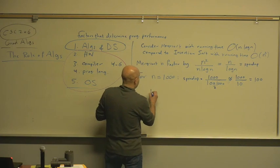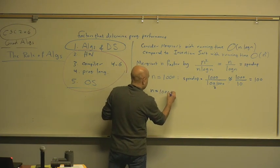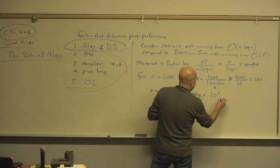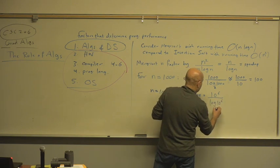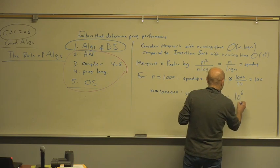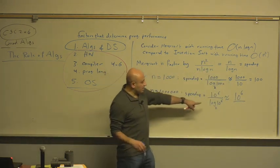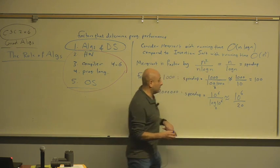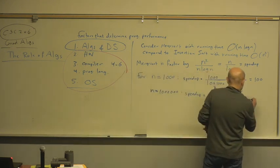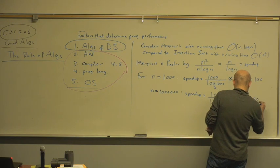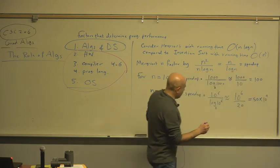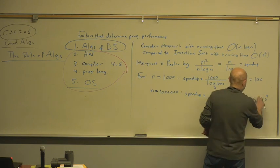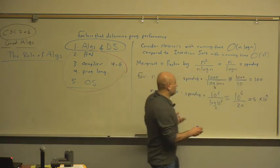In fact, if we look at n equals 1,000,000, the speedup equals 1,000,000 divided by log 1,000,000 base 2, and this is approximately 10^6 divided by what's log 1,000,000 base 2? This is 20, almost, approximately 20. So this is going to be 5 times 10^4. 100 divided by 20 is 5, so it's 50,000.